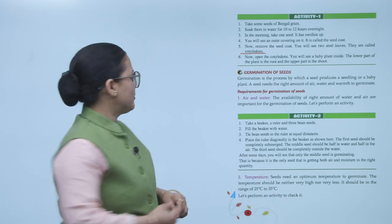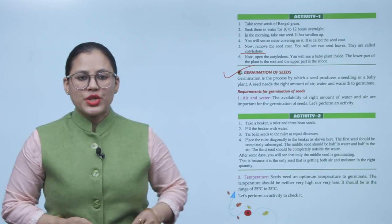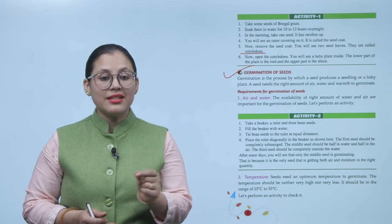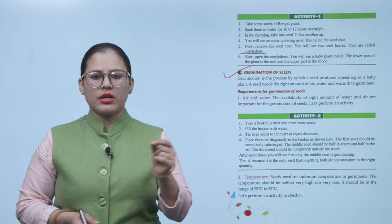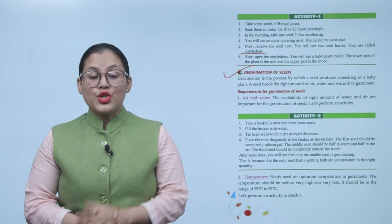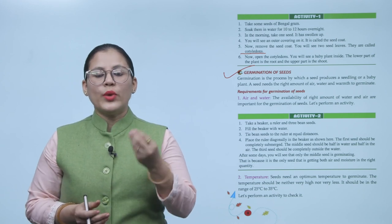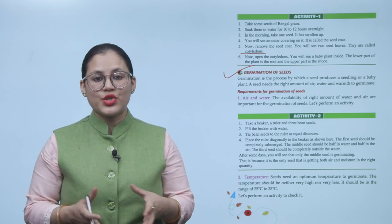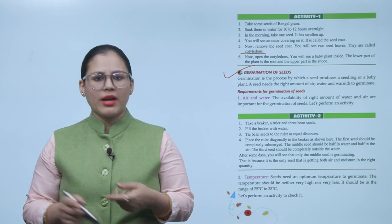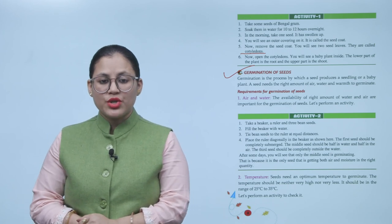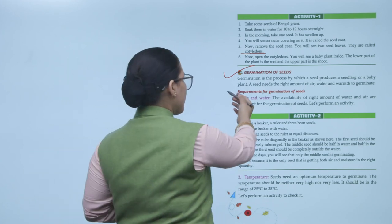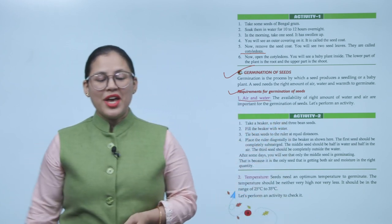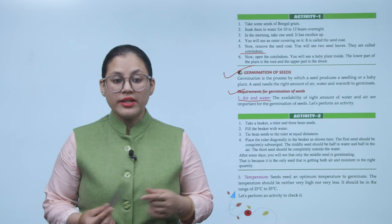Germination of seeds. Germination is the process by which a seed produces a seedling or a baby plant. A seed needs the right amount of air, water, and warmth to germinate. Requirements for germination of seeds: First, air and water. The availability of right amount of water and air are important for the germination of seeds.